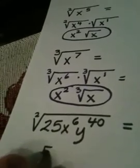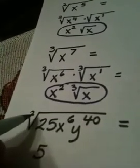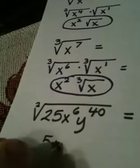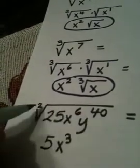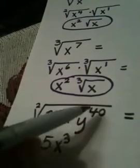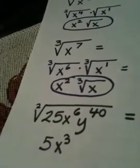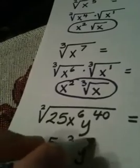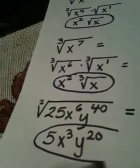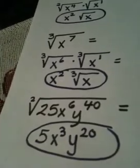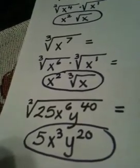The square root of 25 is 5. 6 divided by 2 is 3. That is the exponent on the x. 40 divided by 2 is 20. So 20 is the exponent on the y. No more radical. My answer is 5x cubed y to the 20th.